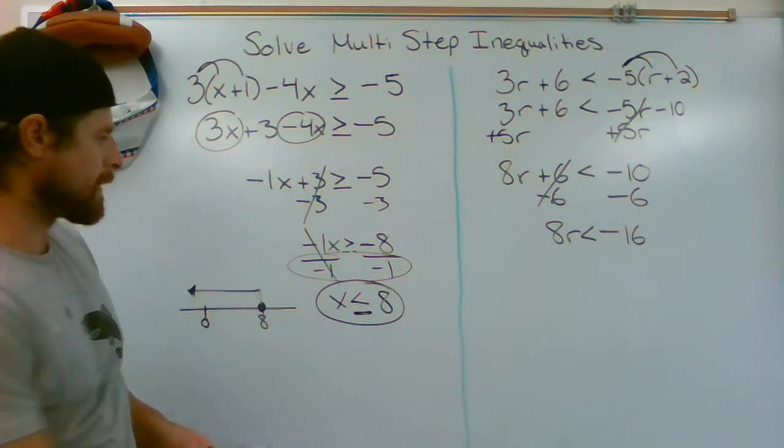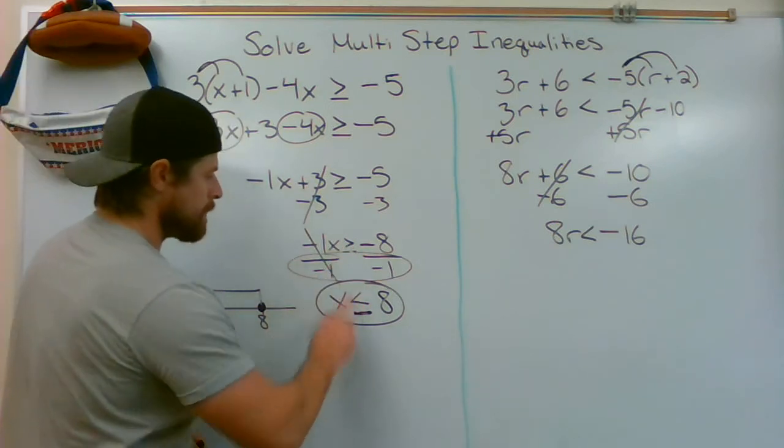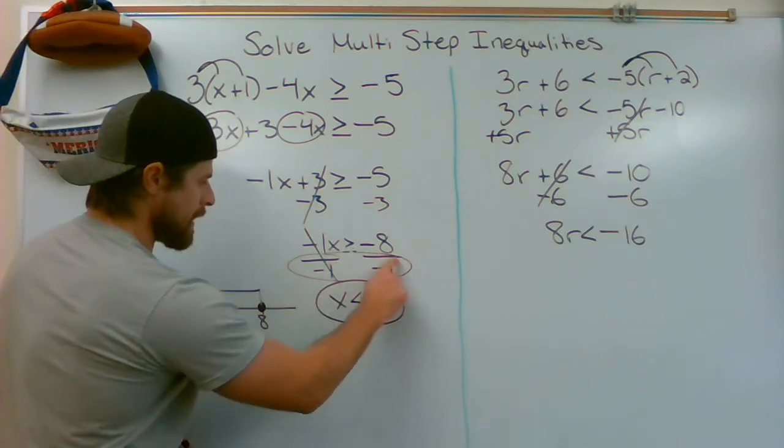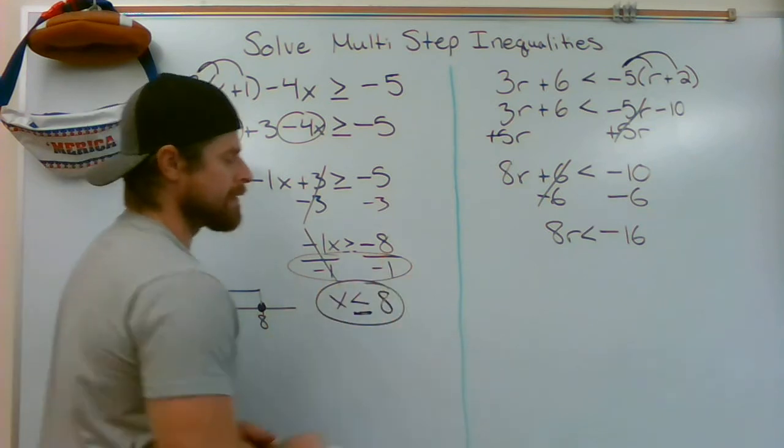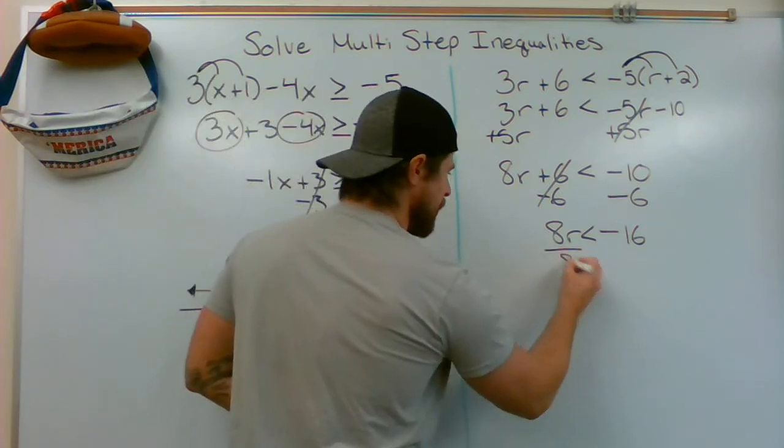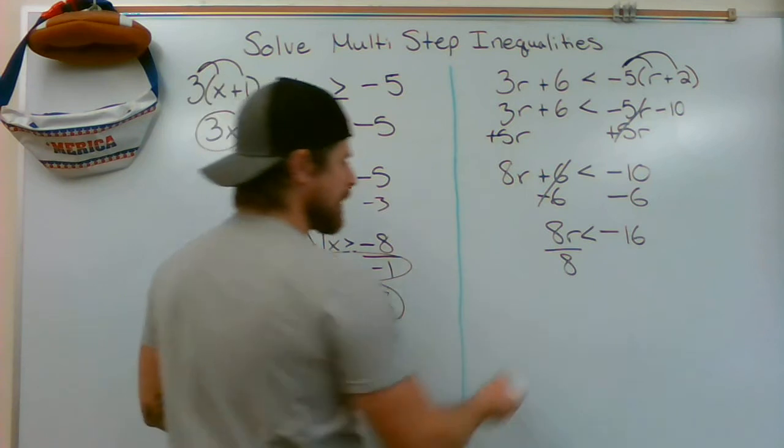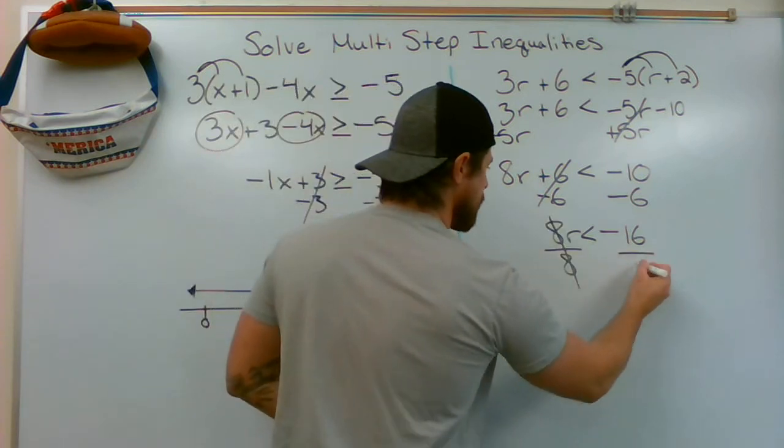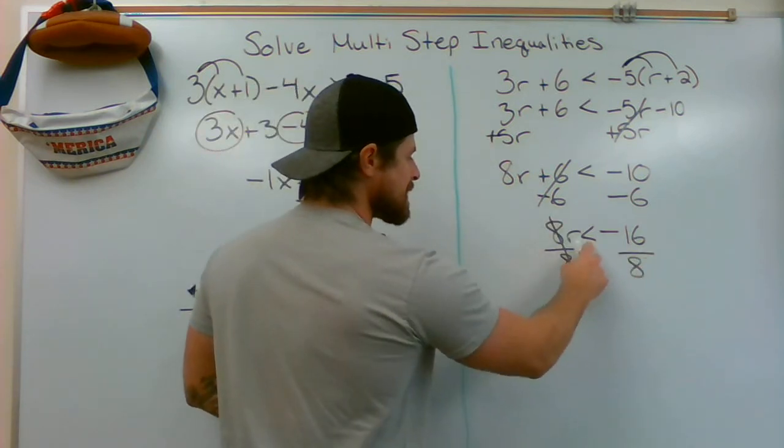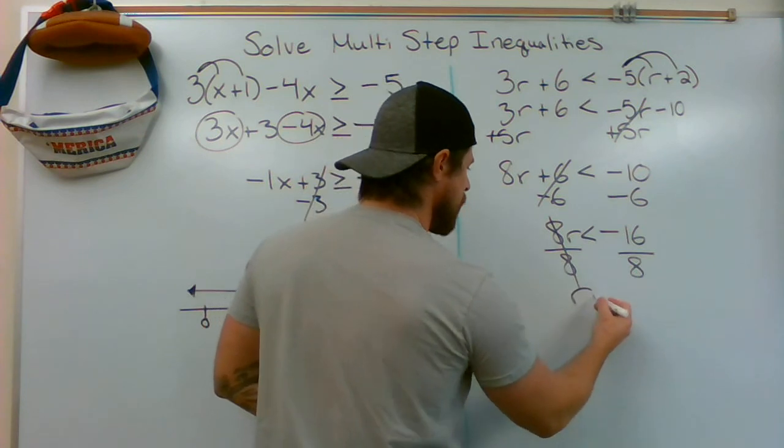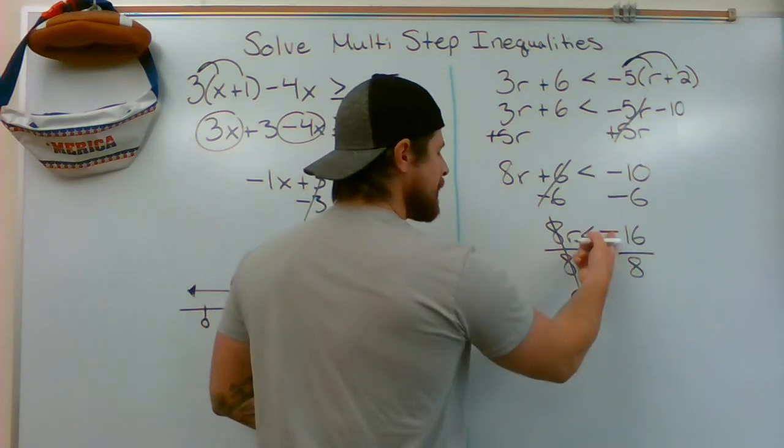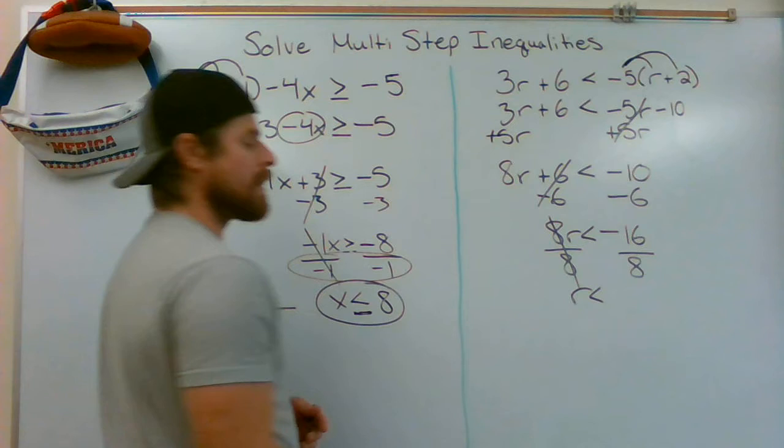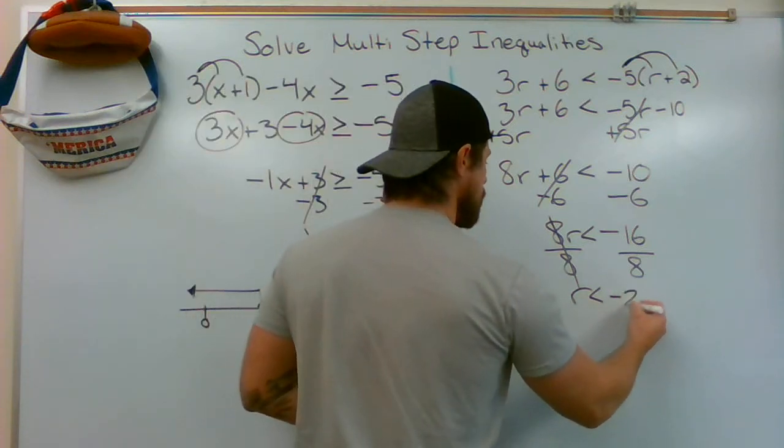Over here, we flipped the symbol because I was dividing by a negative. Here, I'm not dividing by a negative. I'm dividing by positive 8 to cancel out. Divide by positive 8, divide by positive 8. My sign stays exactly as we see it. R is less than negative 16 divided by positive 8 is negative 2.